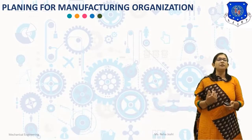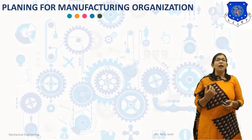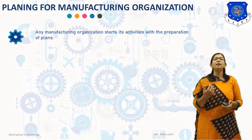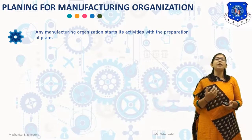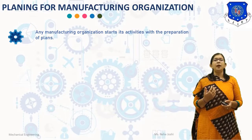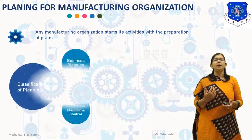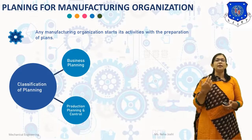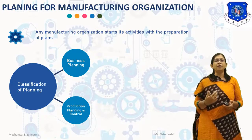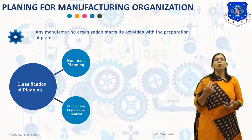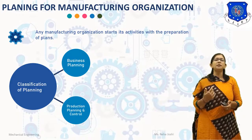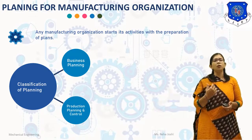Planning for the Manufacturing Organization: any manufacturing organization starts its activities with the preparation of plans. The plans are prepared at two levels — first is Management Level and second is Factory Level. Accordingly, planning is broadly classified into two types: first is Business Planning, and second is Production Planning and Control.